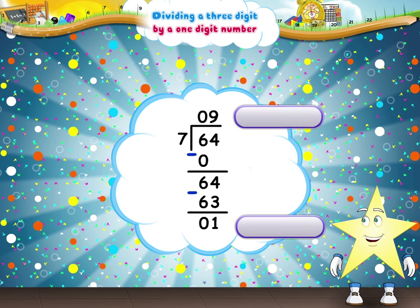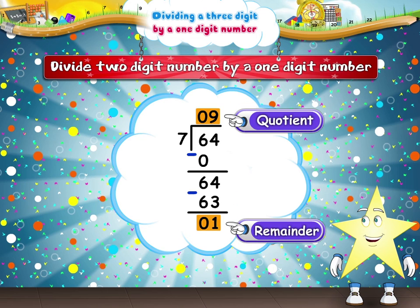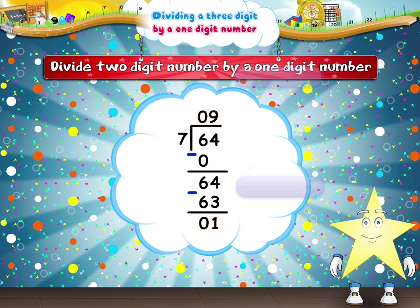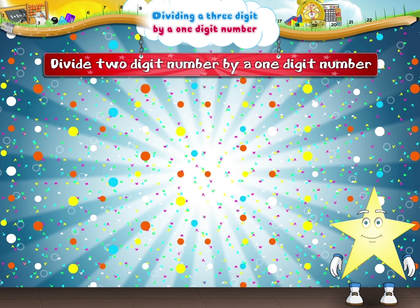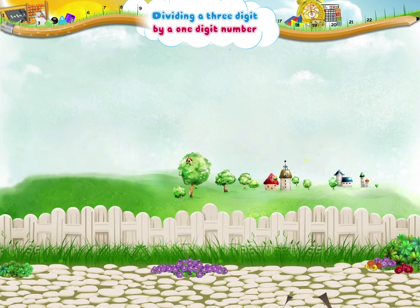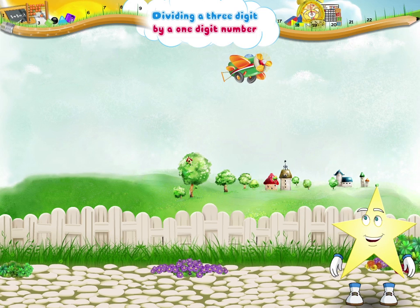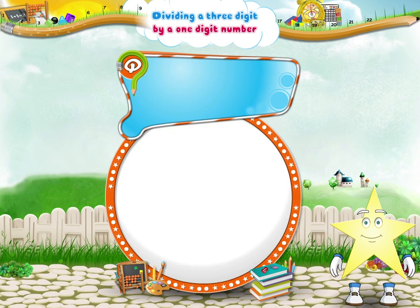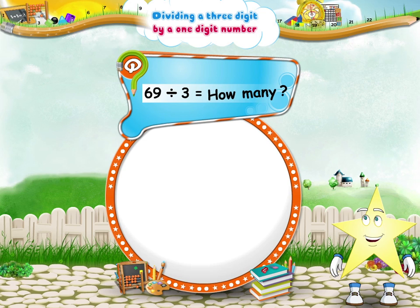Study, do you remember how we divided a two-digit number by a one-digit number? You are not too sure? Ok, let us revise it. Suppose, Starry, we have to find out: 69 divided by 3 equals how many?